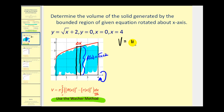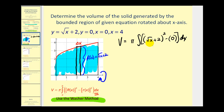The volume is equal to pi times the definite integral of big R squared minus little r squared, where big R is the square root of x plus two and little r equals zero. We are integrating with respect to x, and the interval along the x-axis is from zero to four, so those are our limits of integration. We're not going to evaluate this — instead we'll compare how to solve the same problem using the shell method.